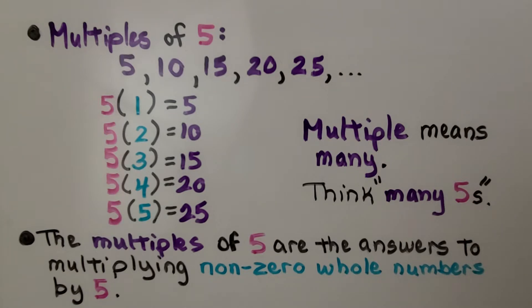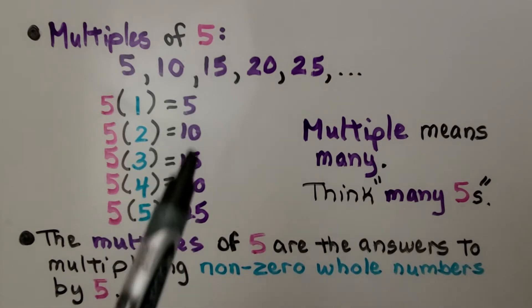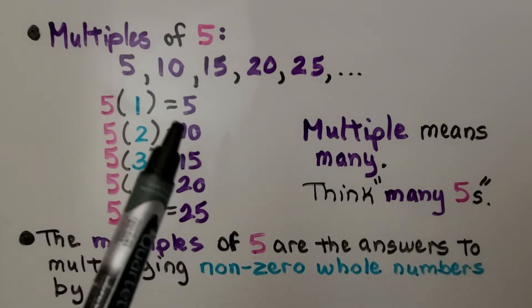For multiples of 5 we have 5, 10, 15, 20, 25. Notice it's the products for the multiplication facts for the 5s.